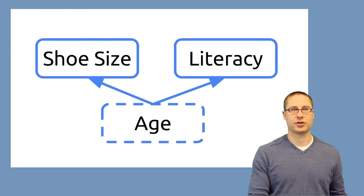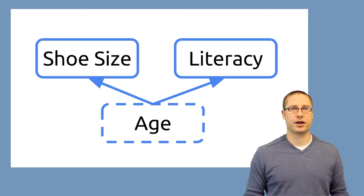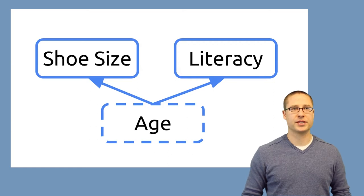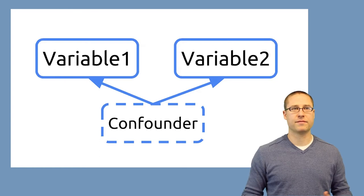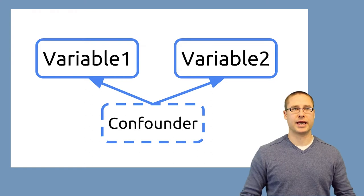When you're young, you have small shoes, and when you're old, you have bigger shoes. And age is also related to literacy — when you're young you're not very literate, and when you're older, you become more literate. So this variable that's related to both shoe size and literacy is what's called the confounder — a variable that's related to two other variables and may potentially make it look like there's a relationship between those variables even when there isn't.